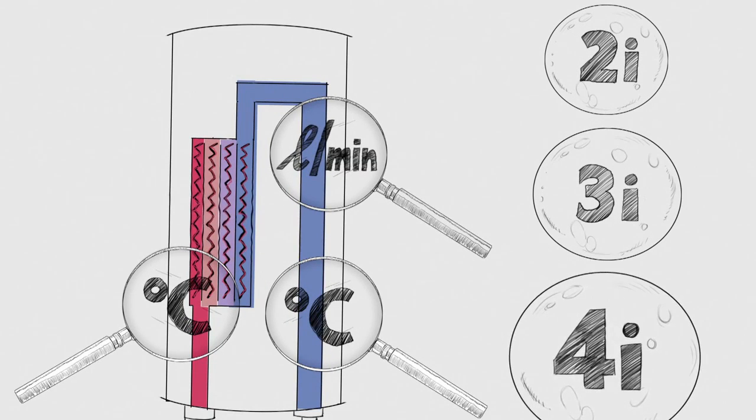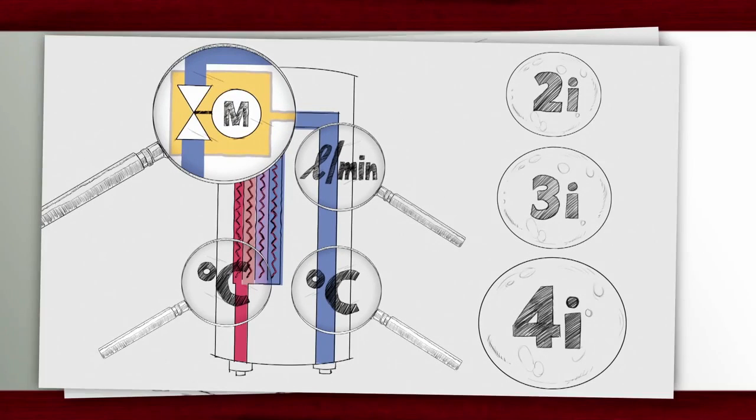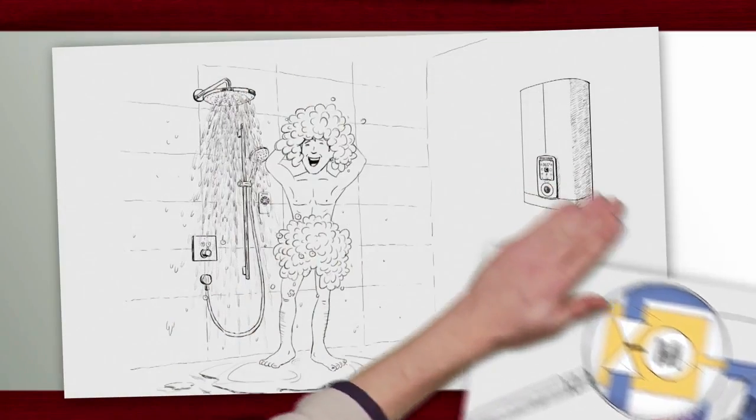4i technology additionally regulates the water volume automatically. A motorized valve adjusts the flow rate when the maximum output of the appliance has been reached. This way, the fully electronic instantaneous water heater maintains exactly the right temperature and offers maximum comfort.